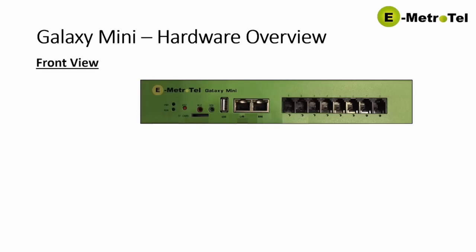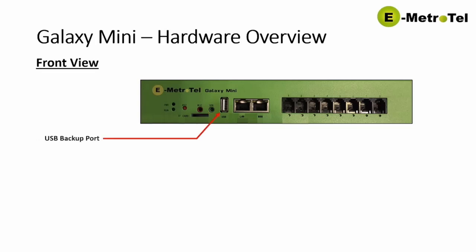Looking specifically at the hardware from the front view, you can see a number of interfaces. We have power and run indicators. We have a music on hold jack, which allows an external source to be used for various music on hold situations. We also offer streaming audio capability for music on hold, or you can upload files directly to the Galaxy Mini. We also have an overhead speaker output, just like the BCM Northstar, which allows you to page to a speaker jack connected to an impedance matching transformer and on to an overhead speaker system. Accessing the page would be done through a feature code or a special key sequence as programmed in the UCX software. We also have a USB interface for backups.